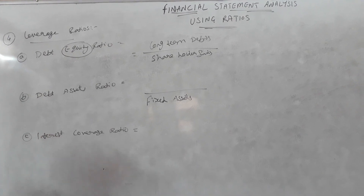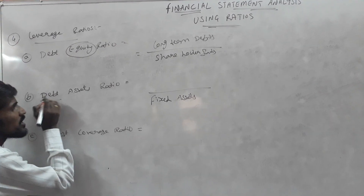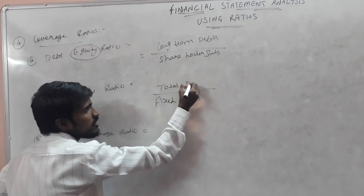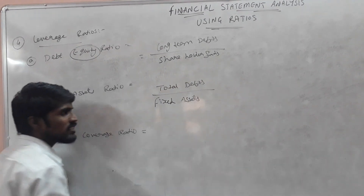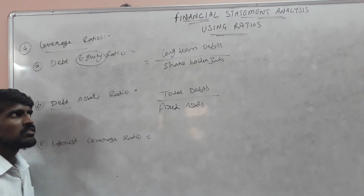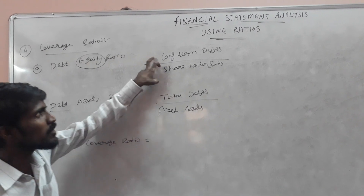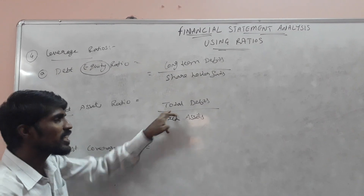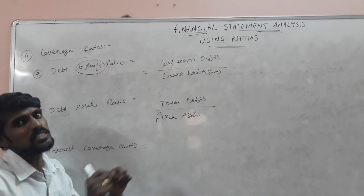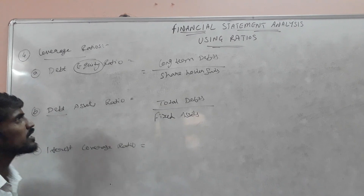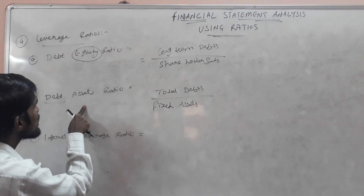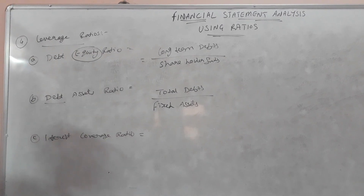For the debt-asset ratio, the formula will be total debts divided by fixed assets. Here, for the debt-equity ratio, I am considering only long-term debts. But for the debt-asset ratio, I am considering total debts — that is nothing but short-term and long-term debts combined. That is the formula for the debt-asset ratio: debts compared with assets, and debts compared with equities.